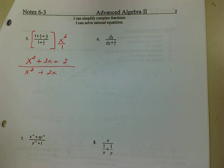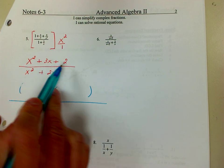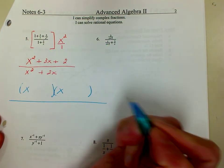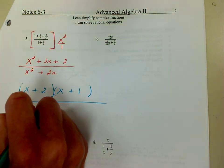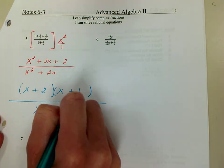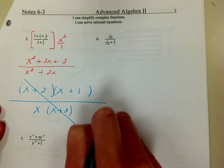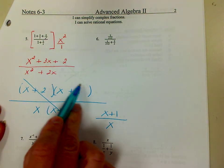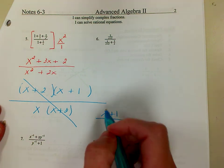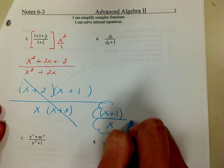Now you just have one fraction. So now you're going to factor. Up here I have a trinomial — two numbers that multiply to get 2 and add to get 3, that's 2 and 1. The only thing we can do down here is factor out an x, leaving x plus 2. That cancels out, and you're left with x plus 1 divided by x. These x's cannot cancel because if there's an addition or subtraction sign, all of that is a package deal. Therefore, this is the final answer.